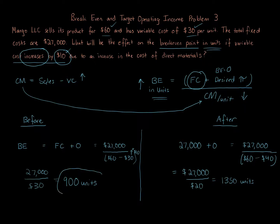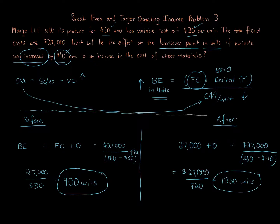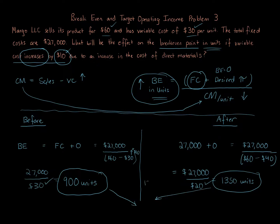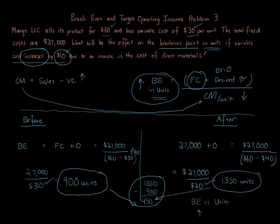Before the change, break-even was 900 units; after, it's 1,350 units. We saw the contribution margin drop from $30 to $20, confirming that break-even units increase. Taking 1,350 after minus 900 before, the change is 450 units. So the answer is that the break-even in units increases by 450.